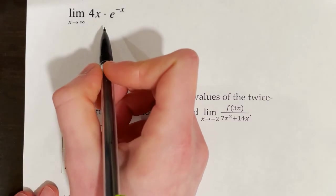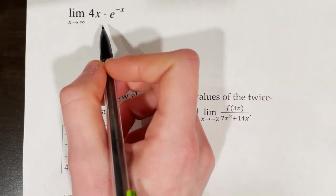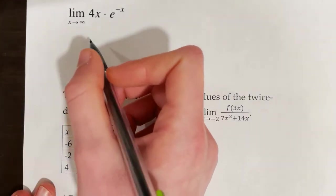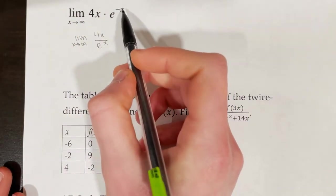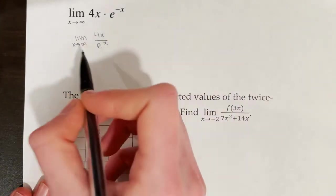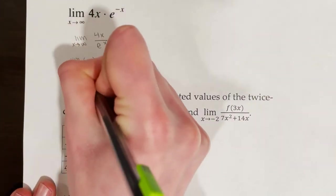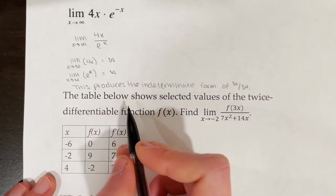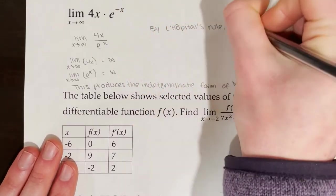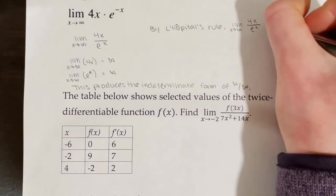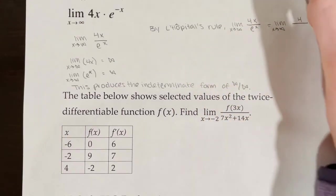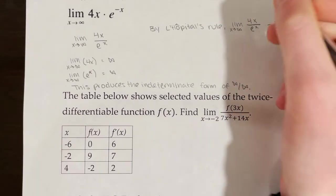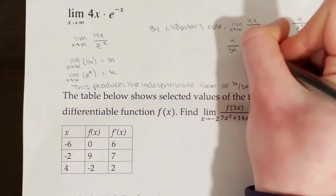Find the limit as x approaches infinity of 4x·e^(−x). Since L'Hôpital's rule requires a quotient, rewrite this as 4x/e^x (moving e^(−x) to the denominator makes the exponent positive). Testing numerator and denominator both produce infinity, giving indeterminate form ∞/∞. By L'Hôpital's rule, take derivatives: numerator becomes 4, denominator becomes e^x. Then 4/e^∞ = 4/∞ = 0. This limit equals 0.